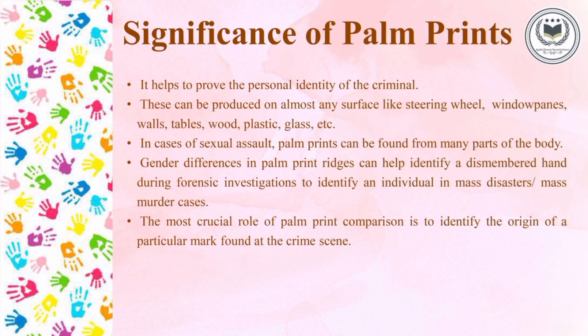The significance of palm prints is that they help in personal identification and proving the identity of a criminal. Palm prints are produced on almost any surface — like steering wheels, tables, glass, plastic, wood, window panes, and walls. In cases of sexual assault, palm prints can be found on the body parts of the victim. Gender differences in palm print ridges can help identify a dismembered hand during forensic investigations, and to identify individuals in mass disasters or mass murder cases. The particular marks found at the crime scene are easily identified through palm print comparison.